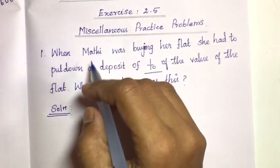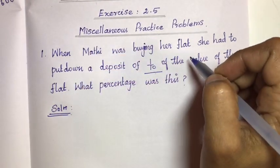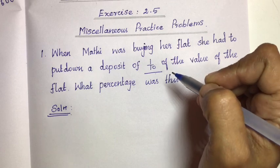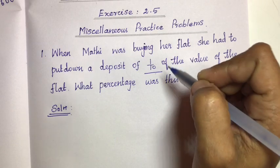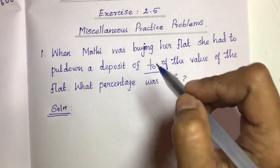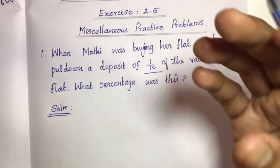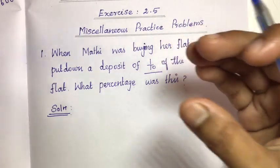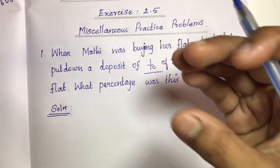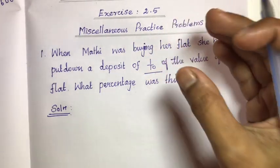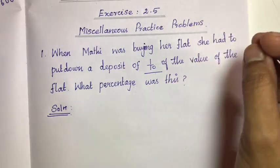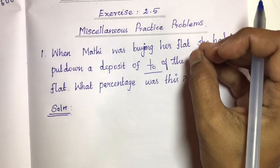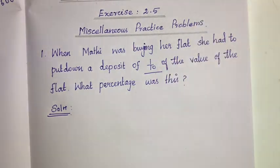We have one flat. The flat value is 1/10 portion. The flat amount deposited is 1/10 portion deposit — that is the first day deposit. The deposit amount needs to be expressed as a percentage.